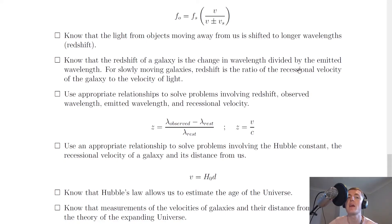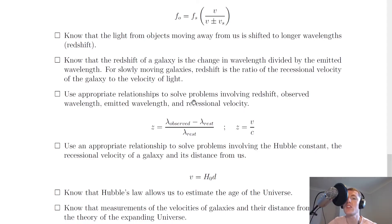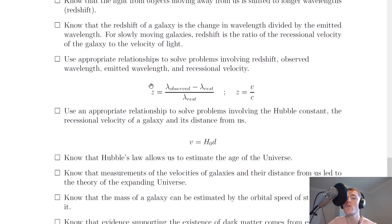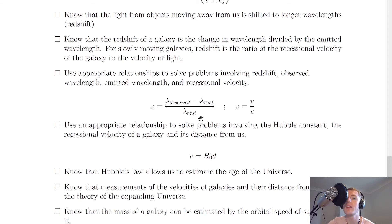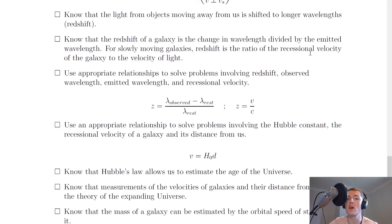It says to know that the redshift of a galaxy is the change in wavelength divided by the emitted wavelength. For slowly moving galaxies, redshift z is also the ratio of the recessional velocity of the galaxy to the velocity of light. So z = Δλ / λ_rest = (λ_observed − λ_rest) / λ_rest, and also z = v / c, where v is recessional velocity and c is the speed of light.